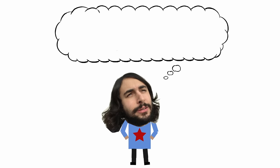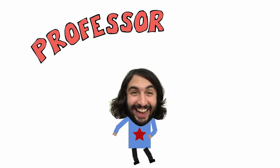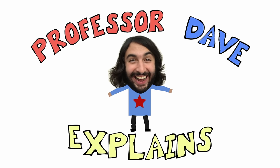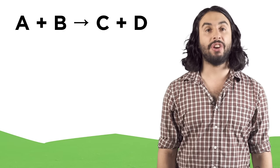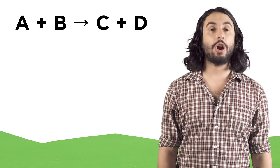Hey, it's Professor Dave. Let's look at chemical equilibria. Sometimes chemical reactions are not unidirectional—they are reversible.